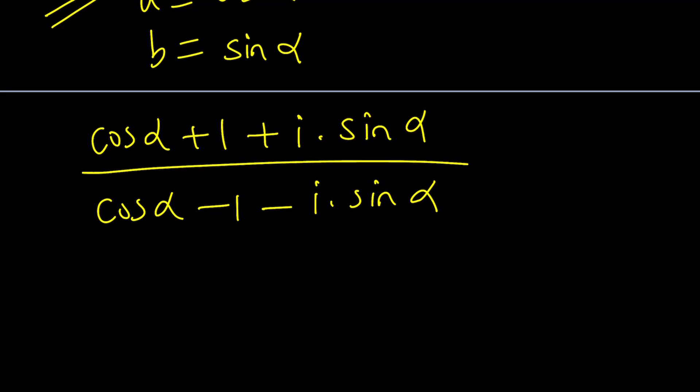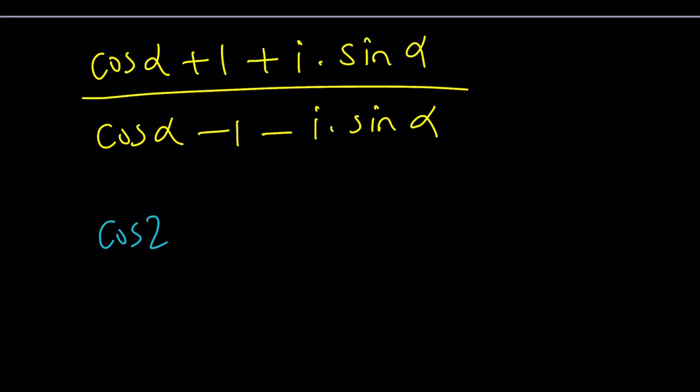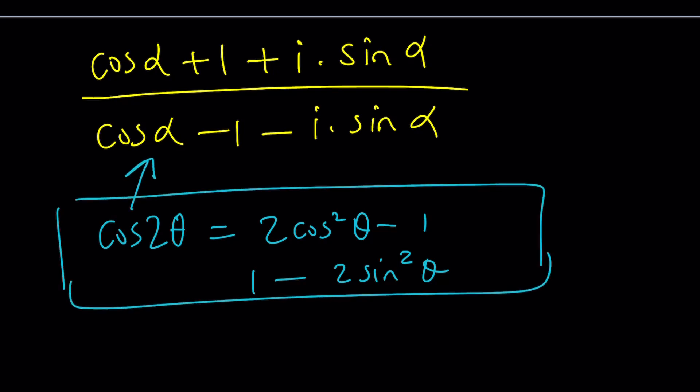We're going to get cosine alpha plus 1 plus i times sine alpha, and that is going to be divided by a minus 1 minus i times sine alpha. This might look pretty complicated, but don't worry. Whenever you get something like this, like cosine with a 1 or plus or minus 1, then you should think double angles or should I say half angle formulas.